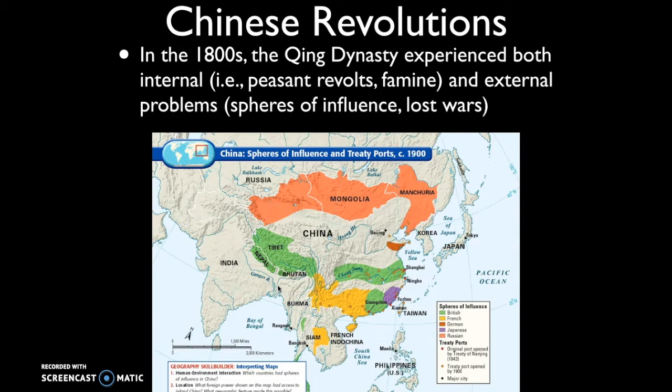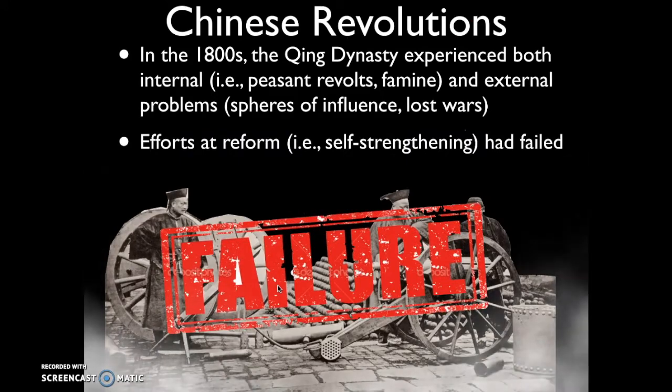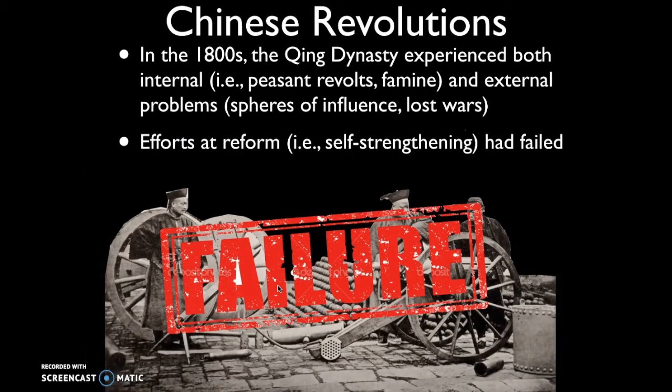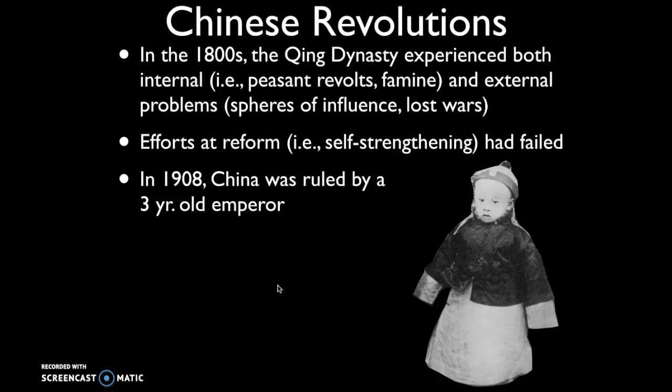There were spheres of influence carved out across China by various industrial powers like the British, the Germans, the French, the Japanese, and the Russians. China attempted to reform through a series of policies known as self-strengthening, but self-strengthening ultimately failed. The reason it failed is because China is a very traditional, conservative society and culture.